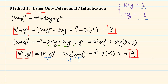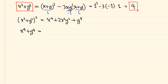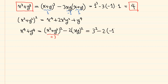For the power of 4, we use the identity: x squared plus y squared squared equals x to the power of 4 plus 2x squared y squared plus y to the power of 4. Therefore, x to the power of 4 plus y to the power of 4 equals x squared plus y squared squared minus 2xy squared. We have already obtained that x squared plus y squared equals 3, so we have 3 squared minus 2 times minus 1 squared, which gives 7.